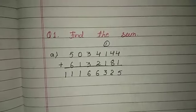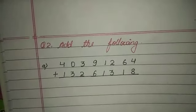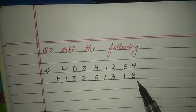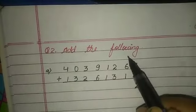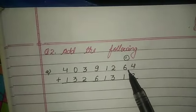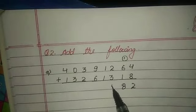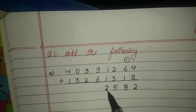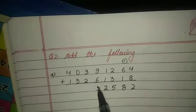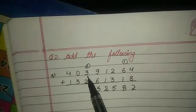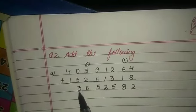Come to question number 2: add the following. In the ones place, 4 plus 8 equals 12 — write 2 and carry 1. 1 plus 6 is 7, and 7 plus 1 is 8. 2 plus 3 is 5. 1 plus 1 is 2. 9 plus 6 is 15 — write 5 and carry 1. 1 plus 3 is 4, and 4 plus 2 is 6. 0 plus 3 is 3, and 4 plus 1 is 5.